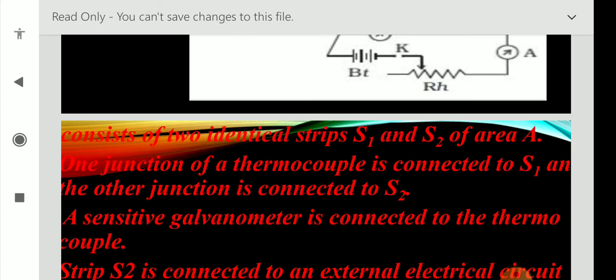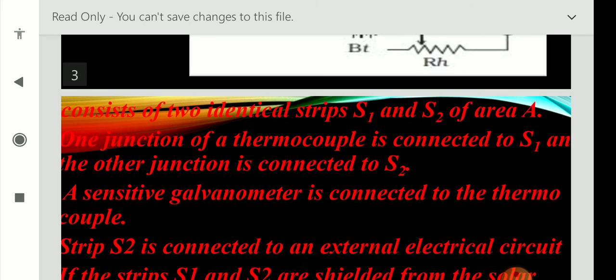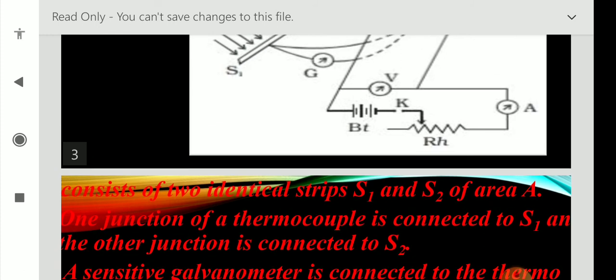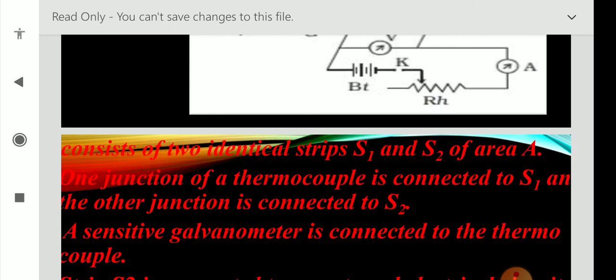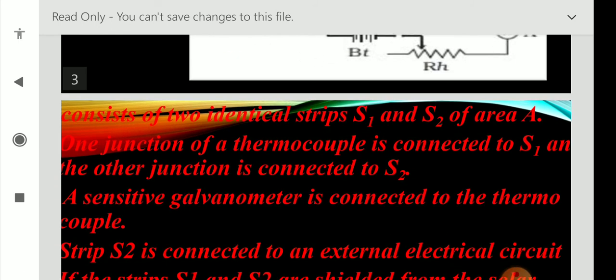Pyrheliometer consists of two identical strips S1 and S2, same material strips of area A. One junction of the thermocouple is connected to strip S1, and the other junction is connected to strip S2.